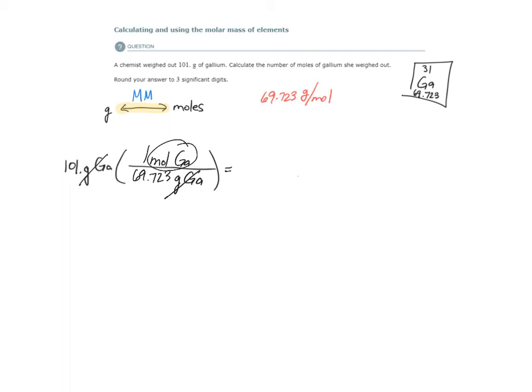So placing it into the calculator, 101 divided by 69.723 gives me 1.44859 moles of gallium. We're limited to 3 significant digits,